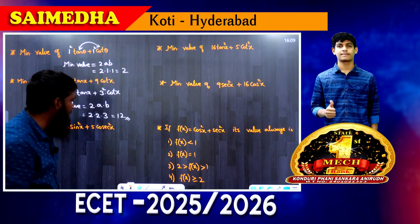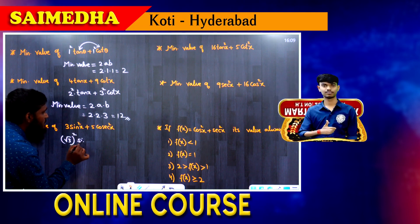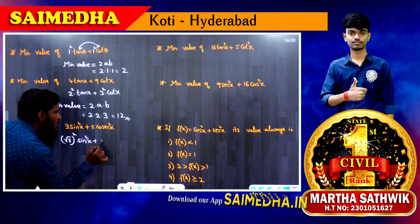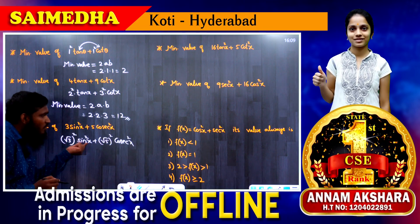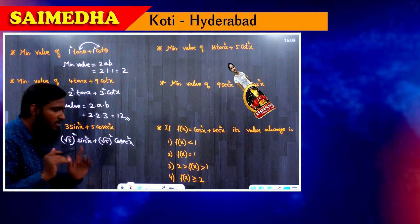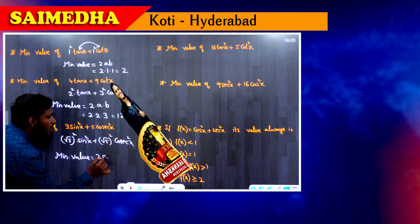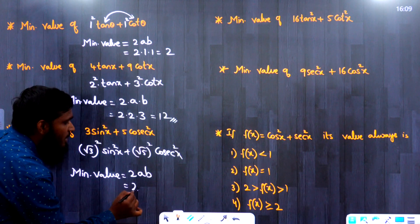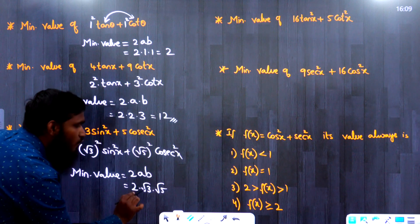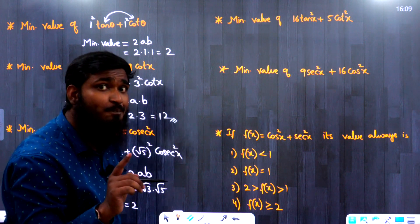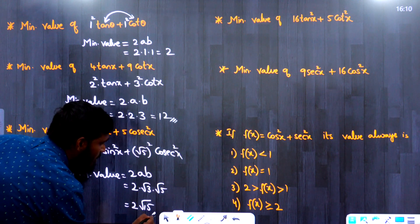Next: minimum value of 3 sin²x + 5 cosec²x. Write 3 = (√3)² and 5 = (√5)², so a = √3 and b = √5. Since sin²x and cosec²x are reciprocals, minimum value = 2ab = 2 × √3 × √5 = 2√15.